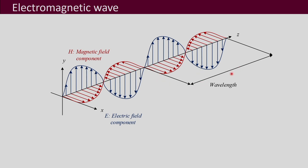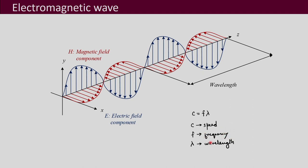Some important terms related to electromagnetic waves are the wavelength, the speed of the wave, and the frequency. You might already be familiar that c equals f times lambda, where c is the speed, f is the frequency, and lambda is the wavelength. What we observe is that frequency and wavelength are inversely proportional, so as your frequency increases, your wavelength reduces.